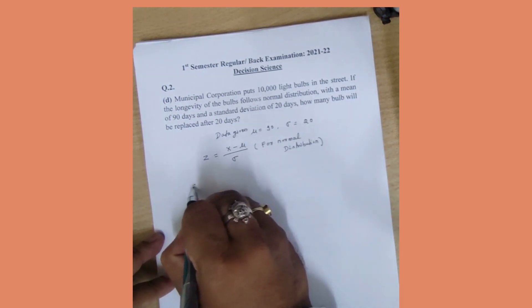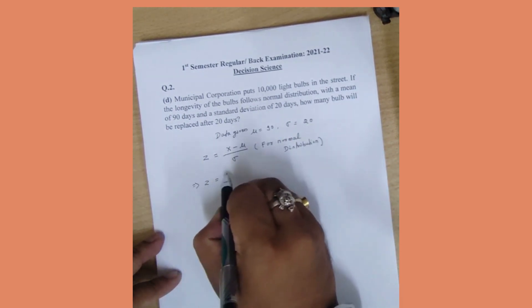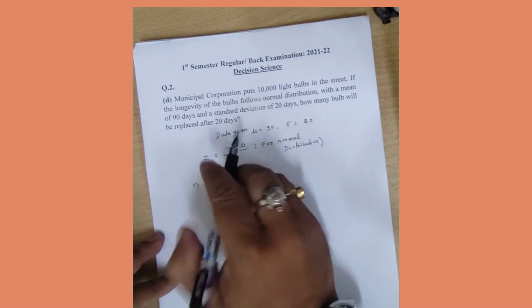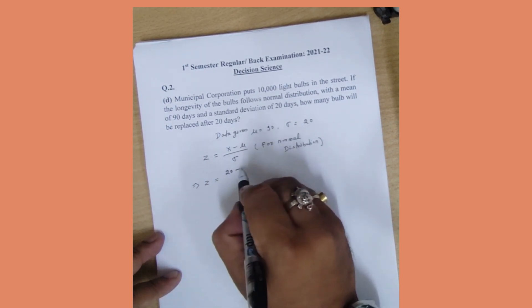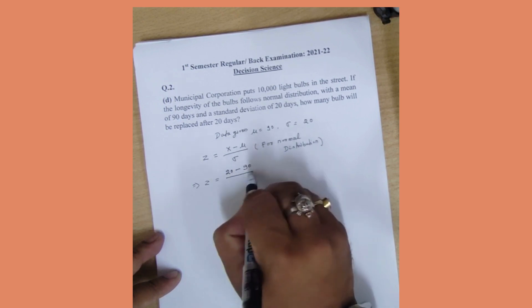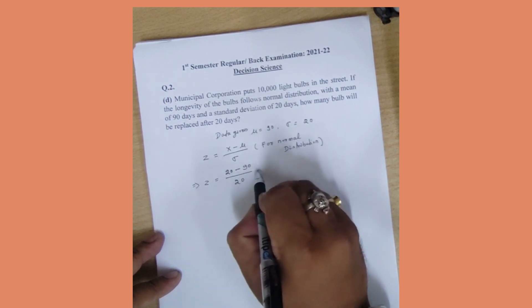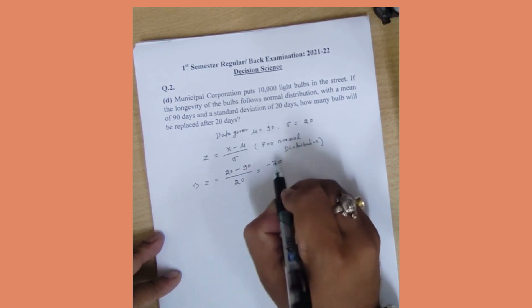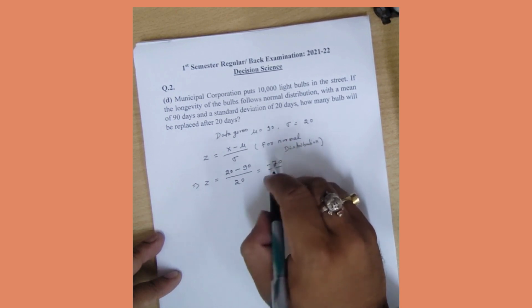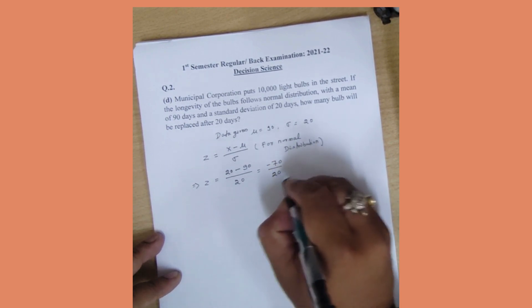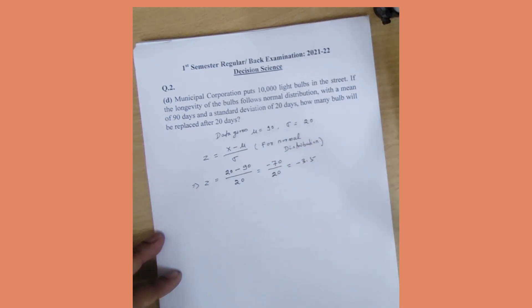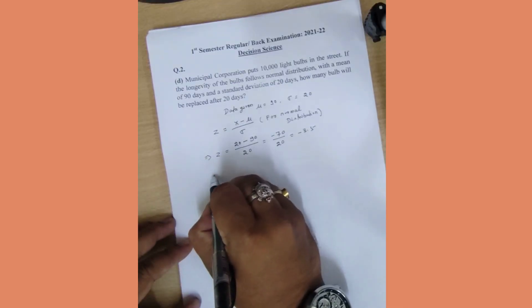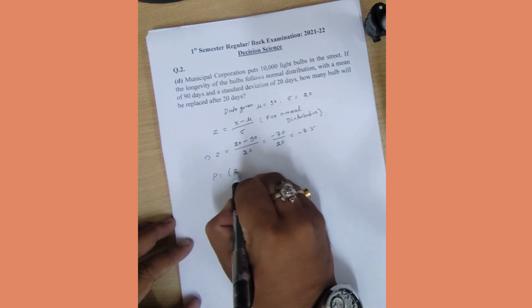I will put the values, so z equals to x value for 20 days. So, I have to write the values for 20 days and mean of 90 divided by standard deviation is 20. So if we calculate 70 divided by 20, this is minus 3.5. So what is the probability that z is less than minus 3.5?